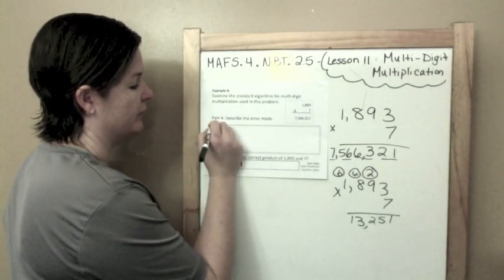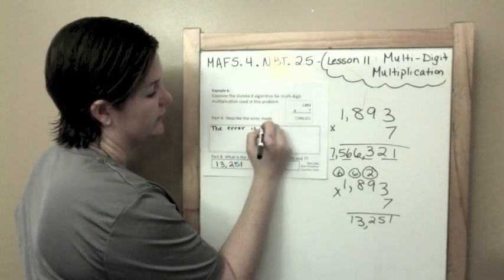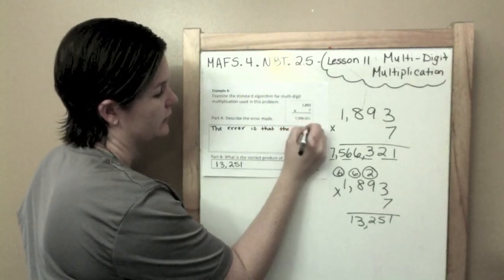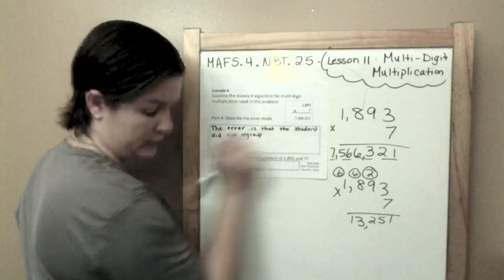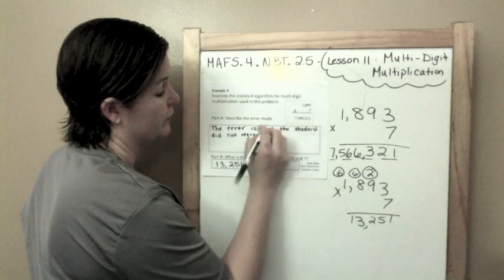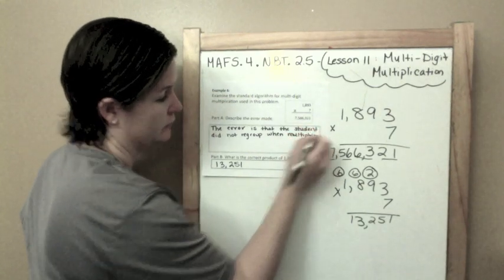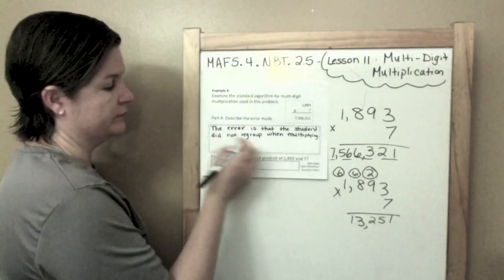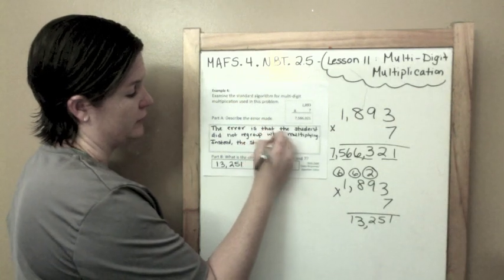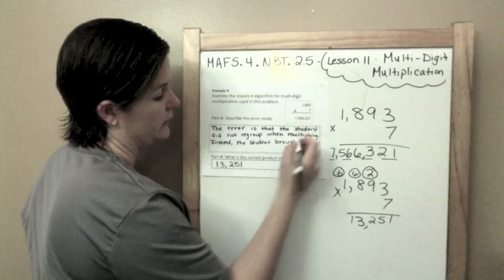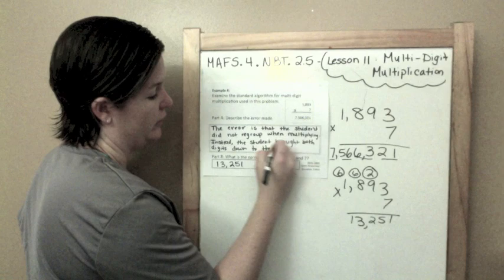Now let's describe the error. The error is that the student did not regroup when multiplying. Instead, the student brought both digits down to the product line.